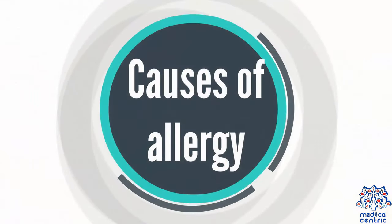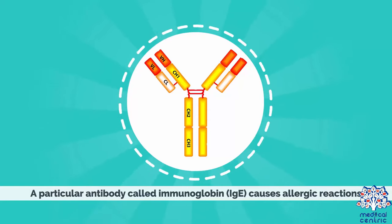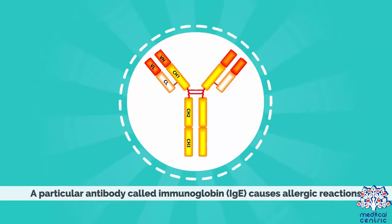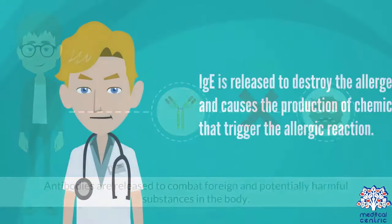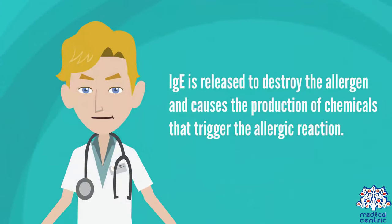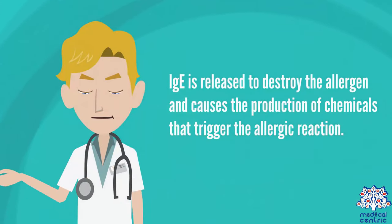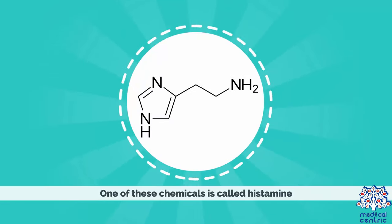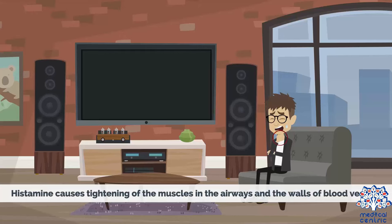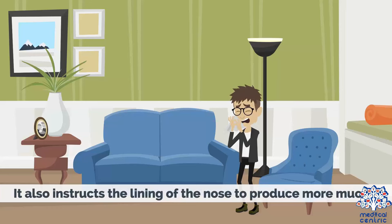Causes of allergy. A particular antibody called immunoglobin or IgE causes allergic reactions. Antibodies are released to combat foreign and potentially harmful substances in the body. Immunoglobin is released to destroy the allergen and causes the production of chemicals that trigger the allergic reaction. One of these chemicals is called histamine. Histamine causes tightening of the muscles in the airways and the walls of blood vessels, and also instructs the lining of the nose to produce more mucus.